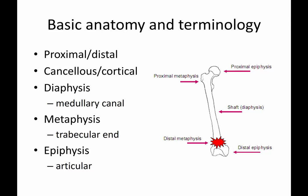Understanding proximal and distal with regard to anatomy: proximal being closer to the center of the body, and distal the opposite. With regard to bone, the diaphysis is the shaft of the bone and it has a medullary canal. The metaphysis is the trabecular end, and then you have the epiphysis — the proximal and distal ends — which are the articulating portions. For the femur, that's the hip joint proximally and the knee joint distally.